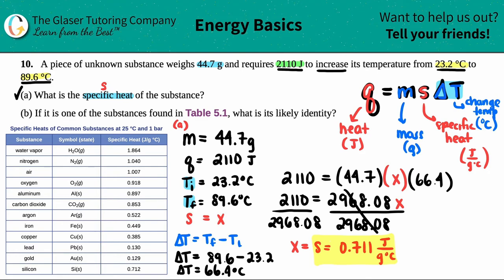Now for letter b, it says if one of the substances found on table 5.1—if this is one of the substances found on table 5.1—what is the identity? Now just know that you can find an identity of a substance by only the specific heat, because the specific heat values are specific—hence why it's called the specific heat. They're specific for the actual identity of the substance, whether it's a compound, element, or a molecule.